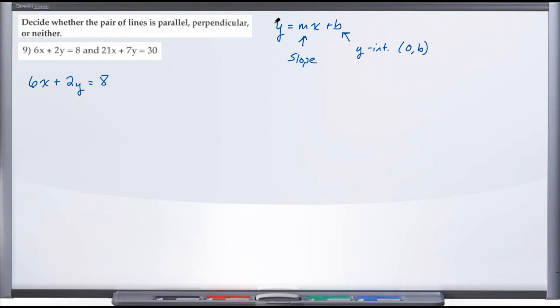And of course, the only thing we're concerned about, since we are asked whether the lines are parallel, perpendicular, or neither, is this m value, right, our slope.